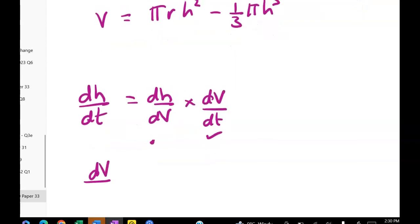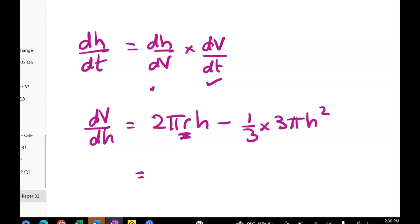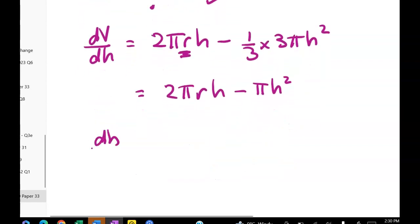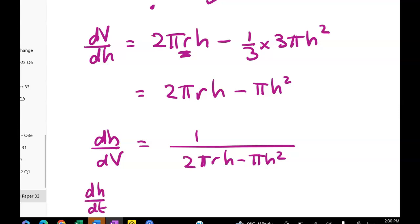Well we can work out dV/dH. dV/dH is two pi R H minus one third times three pi H squared. Remember that R is a constant. Cleaning that up gives me two pi R H minus pi H squared. And that means that dH/dV will be the reciprocal of that, will be one over two pi R H minus pi H squared.